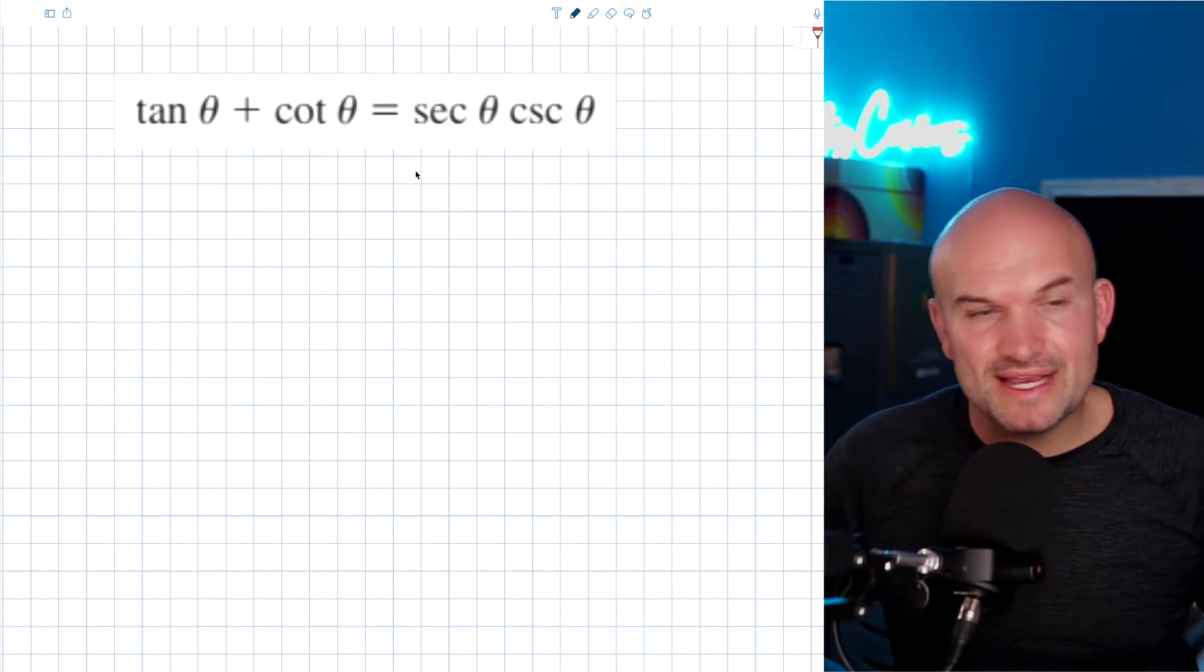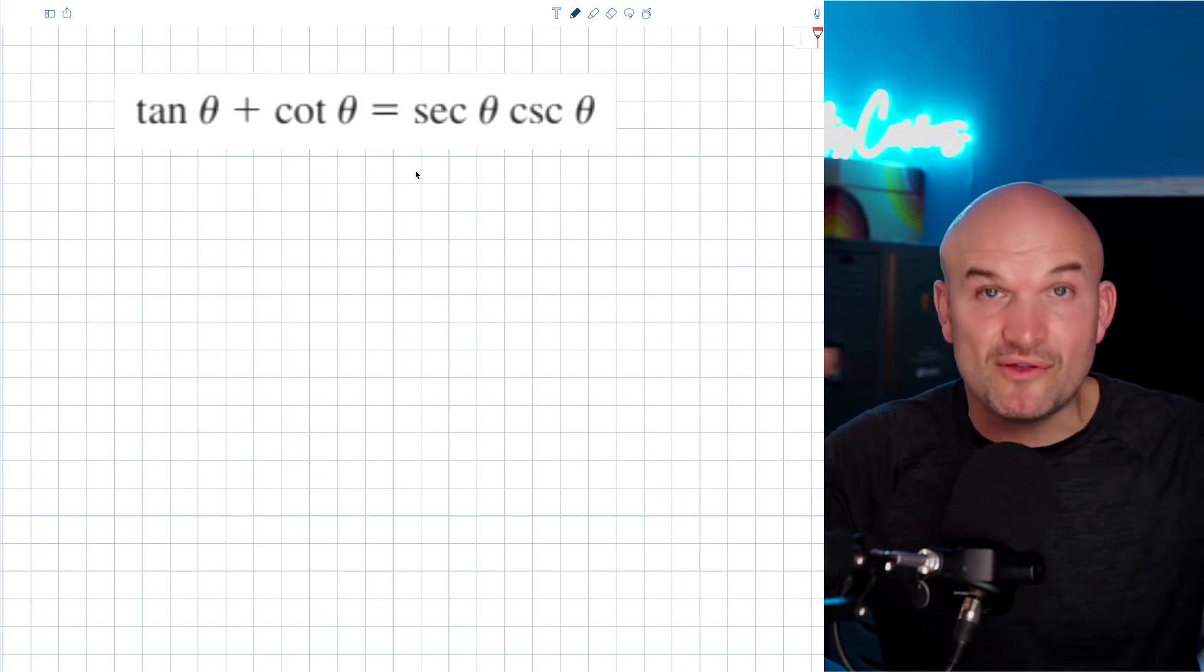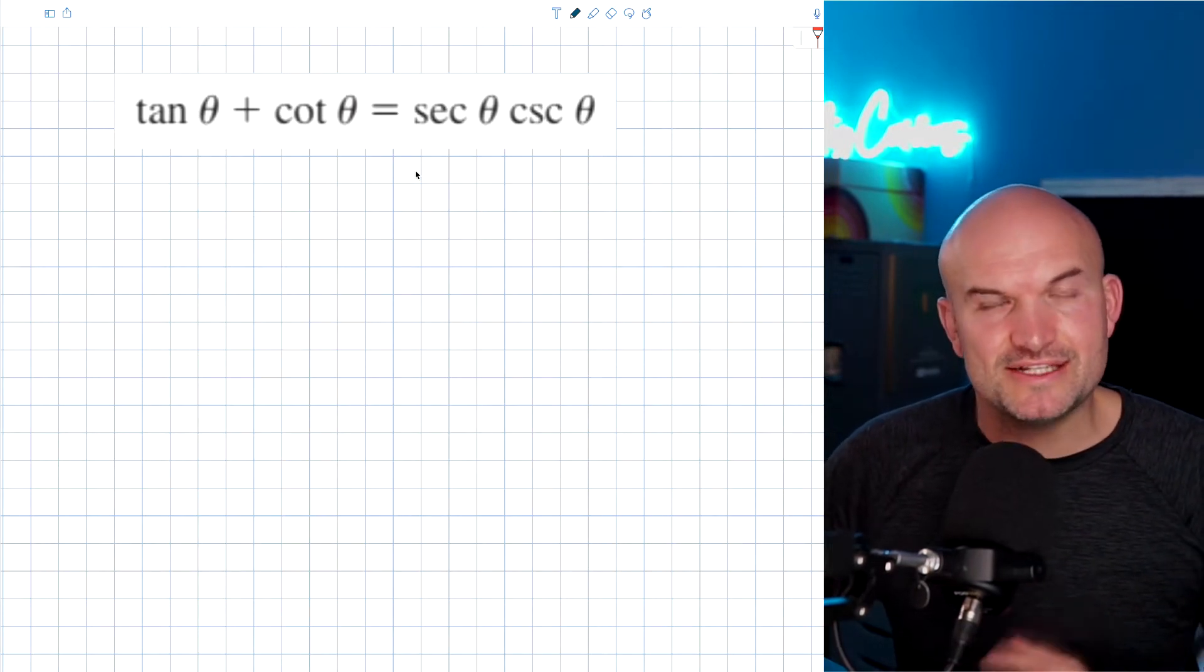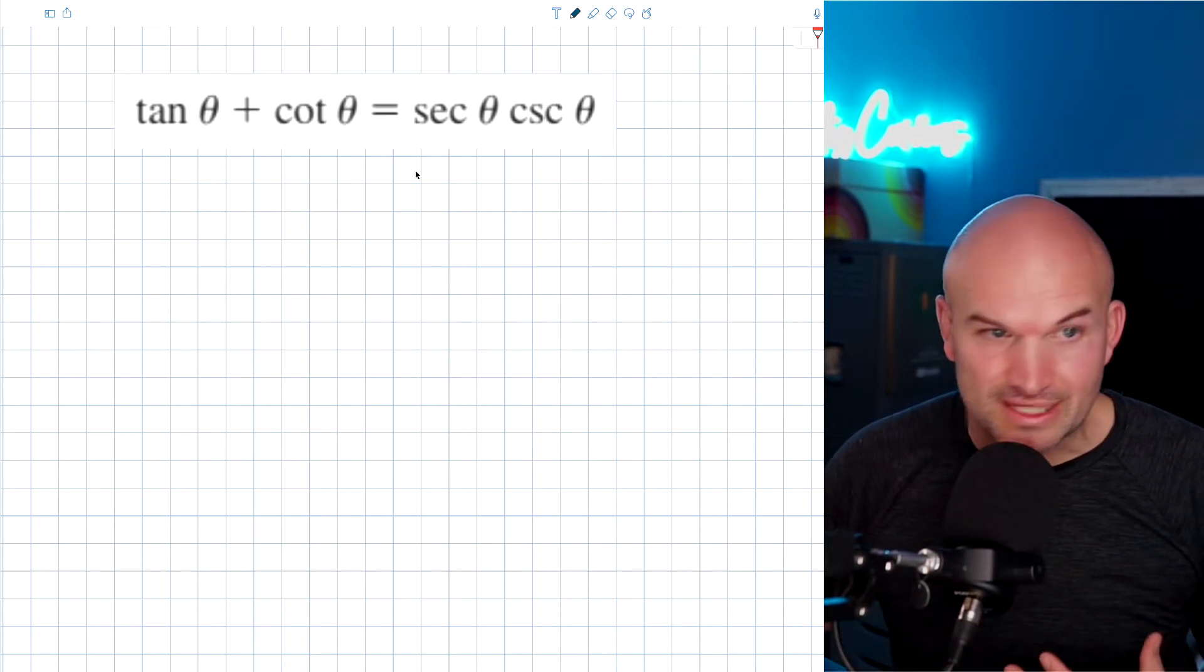So the thing is, it's easier to simplify an identity to make it look like the other side. But the thing is, it's easier to simplify something that's more complicated.